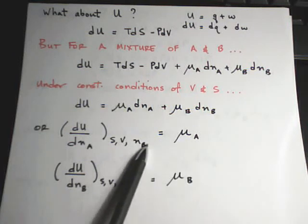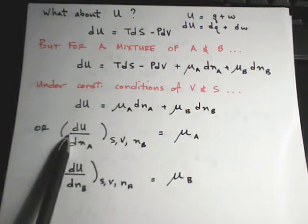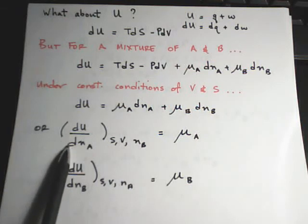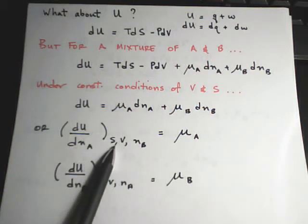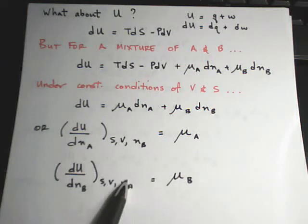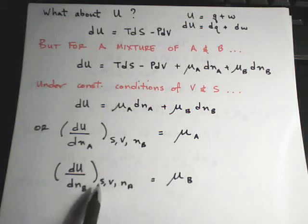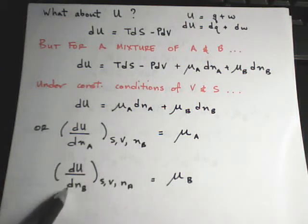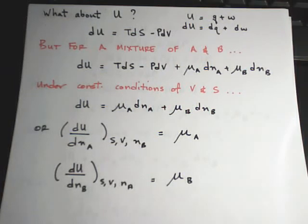The chemical potential of A is equal to DU/DNA at constant S, V, and NB. The chemical potential of B in that mixture at constant NA, entropy, and volume is DU/DNB.